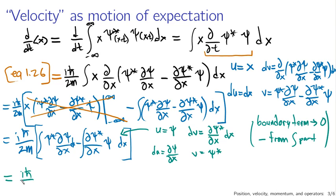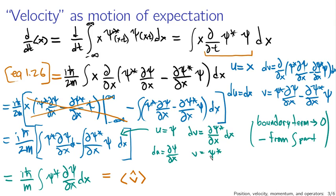The result is that we have two identical terms, and adding a half and a half gives one. The final result is i h-bar over m times the integral of psi star (∂psi/∂x) dx. This is going to be what I call the expectation of the velocity operator. This is the sort of thing you get out of operators in quantum mechanics. We started with the probability distribution given by |psi|^2, and we end up with the partial derivative acting on one of the psi's — so it's not obviously a probability distribution anymore.